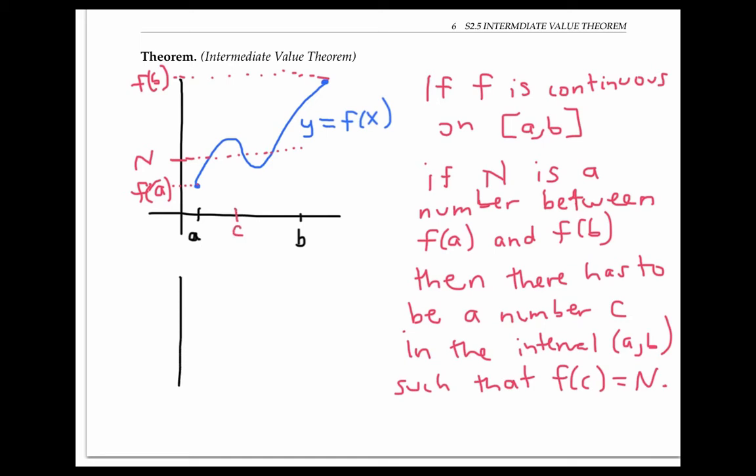The intermediate value theorem can only be applied to continuous functions. If the function is not continuous, then it might jump over n and never achieve that value.